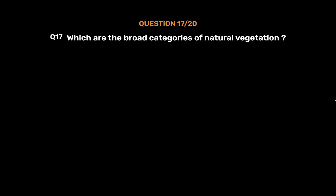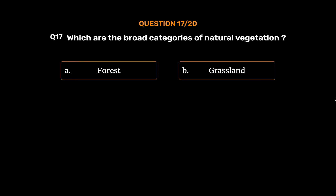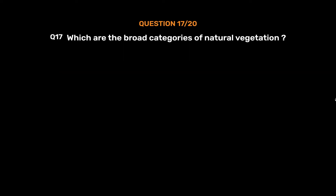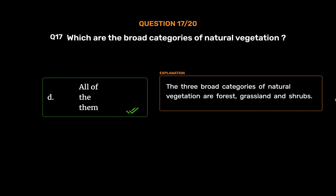Question number 17: Which are the broad categories of natural vegetation? Option A: Forest. Option B: Grassland. Option C: Shrubs. Option D: All of them. The correct answer is Option D: All of them. The three broad categories of natural vegetation are forest, grassland, and shrubs.